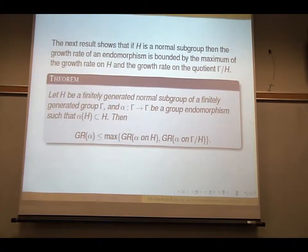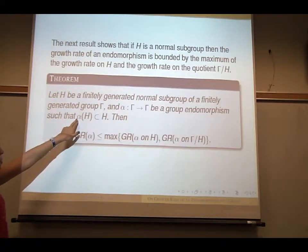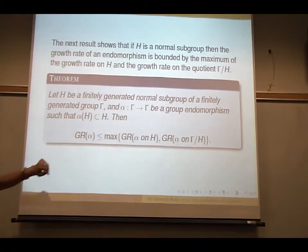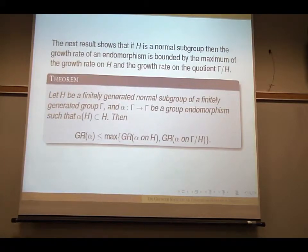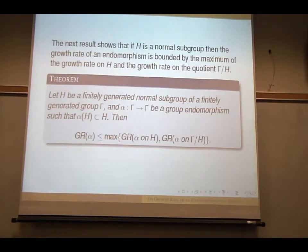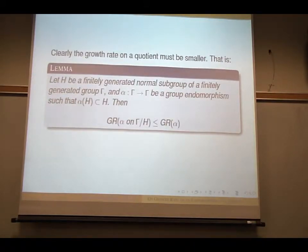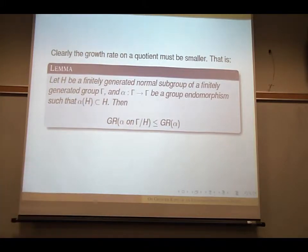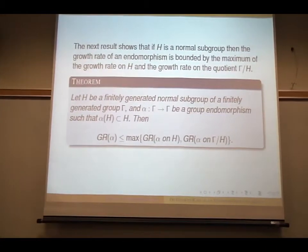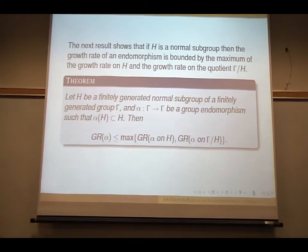So again, suppose that H is a normal subgroup, and the finitely generated alpha(H) is a subset of H, then the growth rate is less than or equal to maximum growth rate of H and growth rate of alpha on the quotient. So before you saw that this growth rate was bigger than the quotient. Here we say it's smaller than the maximum of growth rate of H and the quotient.